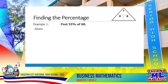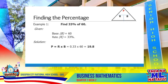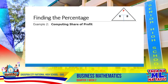We have the first example: Find 33% of 60. Given that the base is 60 and the rate is 33%, and using the formula Percentage equals rate multiplied by the base: 33% in decimal form is 0.33, and 0.33 multiplied by 60 is 19.8. Therefore, 19.8 is 33% of 60.